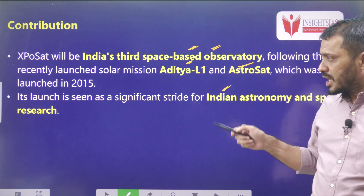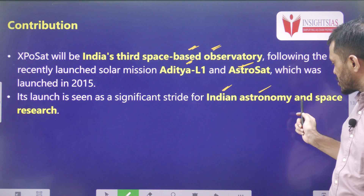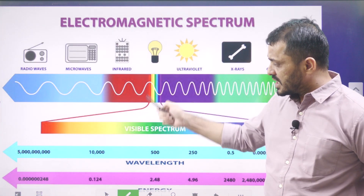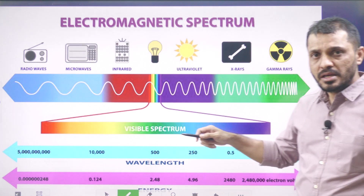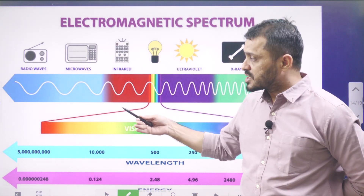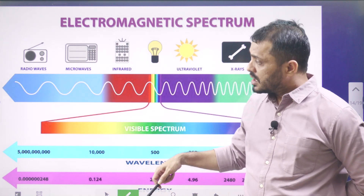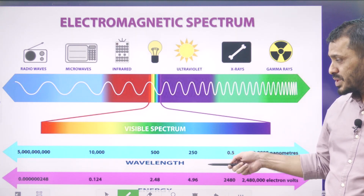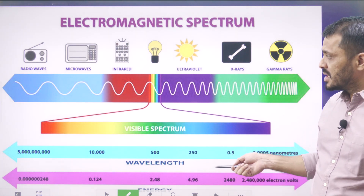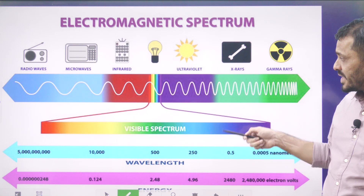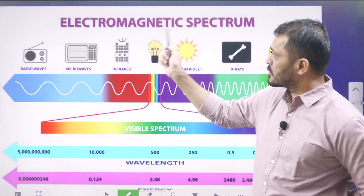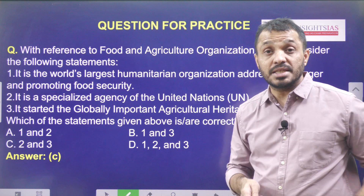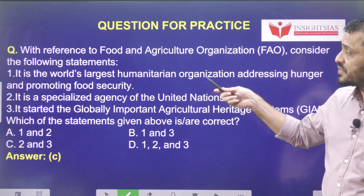X-rays fit into the electromagnetic spectrum, which ranges from longer wavelengths such as radio waves, microwave, and infrared, through the visible spectrum, then ultraviolet, X-rays, and finally gamma rays.